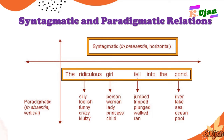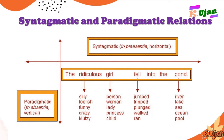Likewise, instead of 'girl,' we could use 'person,' 'woman,' 'lady,' 'princess,' and so on. And instead of 'fell,' we could use 'jumped.' So this is actually the vertical study of language, which is a class study of elements of language, and that is known as paradigmatic study of language.